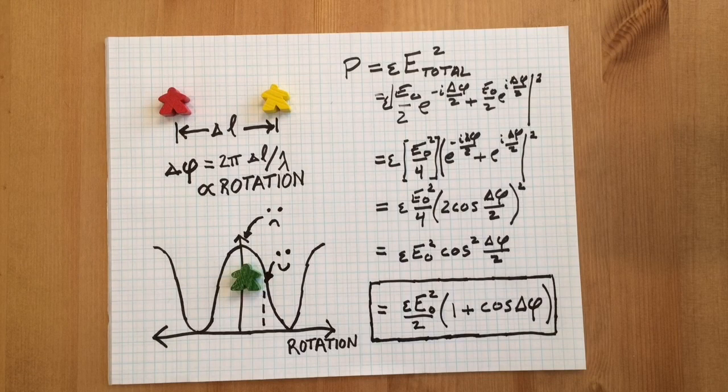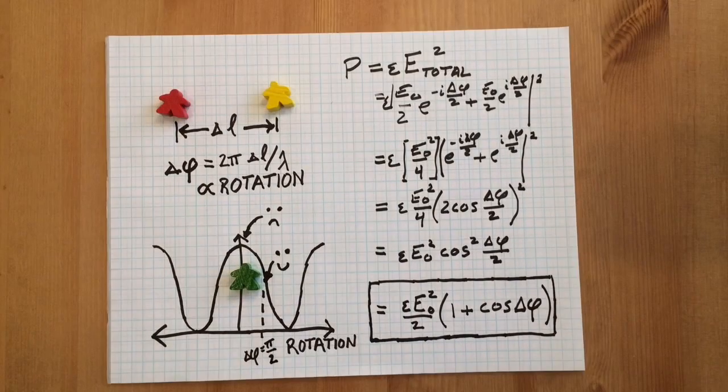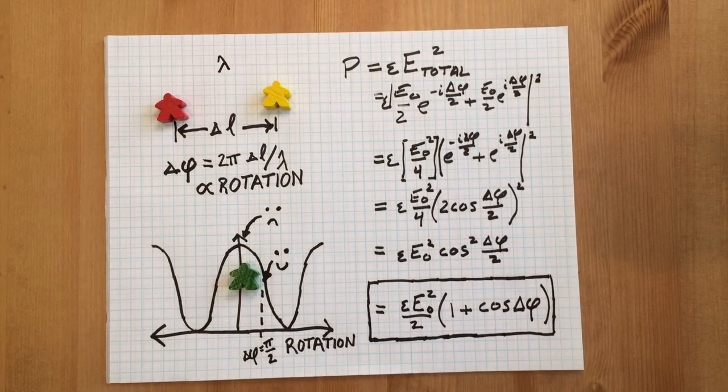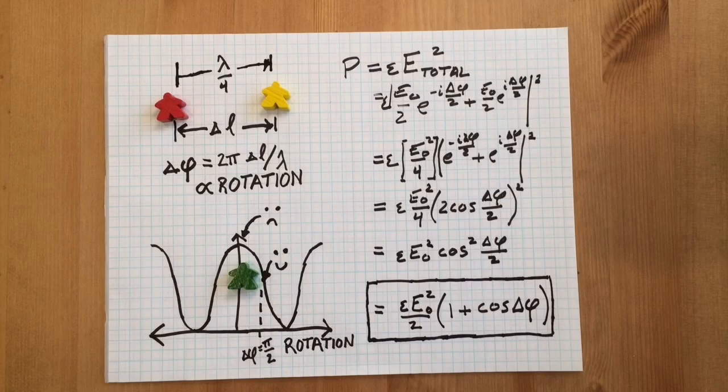The raised cosine has a maximum slope at pi over 2. This corresponds to a quarter wavelength shift between the counterpropagating fields.